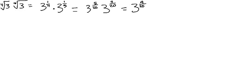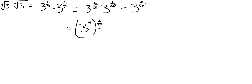And your answer is actually going to be rewritten so that it looks similar to the beginning. By that I mean we're going to turn the fraction back into a radical. So this is actually equal to 3 to the 9th to the 1 over 20th power. Because when you think about it, when you multiply 9 and 1 over 20, you get 9 over 20. So these two steps are actually just equivalent.